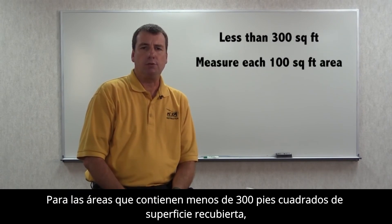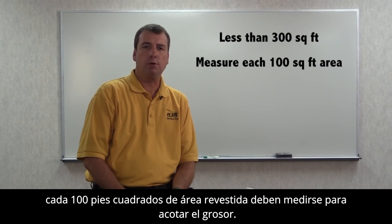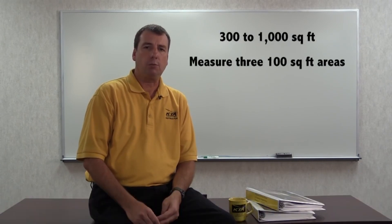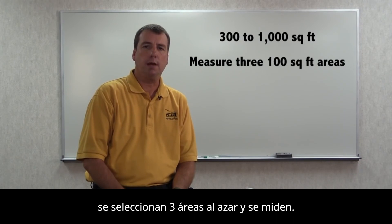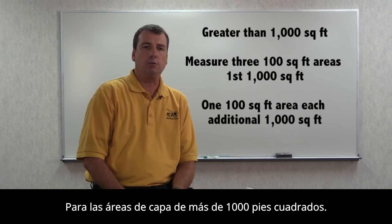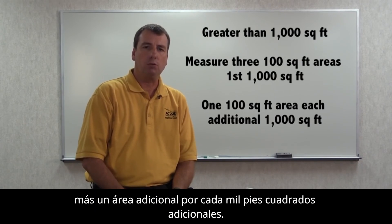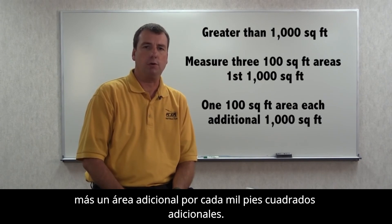For areas containing less than 300 square feet of coated surface, every 100 square foot coated area must be measured for coating thickness. For areas of coating from 300 to 1,000 square feet, three random areas are selected and measured. For areas of coating exceeding 1,000 square feet, three random areas are selected from the first 1,000 square feet plus one additional area for each additional 1,000 square feet.